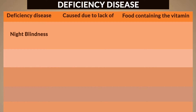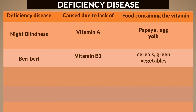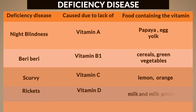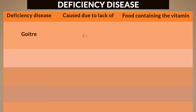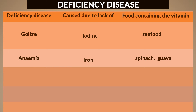Number one: night blindness — due to vitamin A deficiency; essential foods are papaya and egg yolk. Number two: beriberi — due to vitamin B deficiency; essentials are cereals and green vegetables. Number three: scurvy — due to vitamin C deficiency; essentials are lemon and orange. Number four: rickets — due to vitamin D deficiency; essentials are milk and milk products. Number five: goiter — due to iodine deficiency; essential food is seafood. Number six: anemia — due to iron deficiency; essentials are spinach and guava.